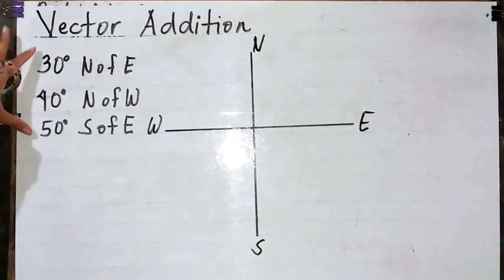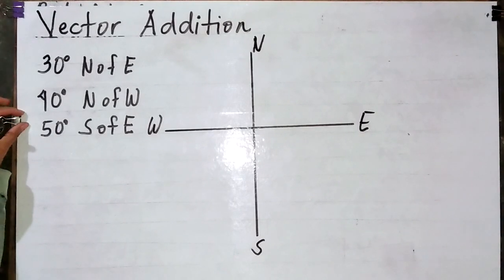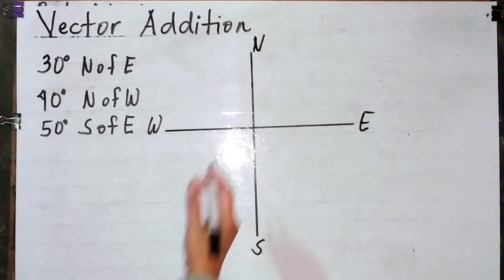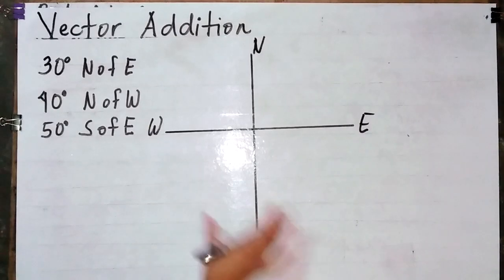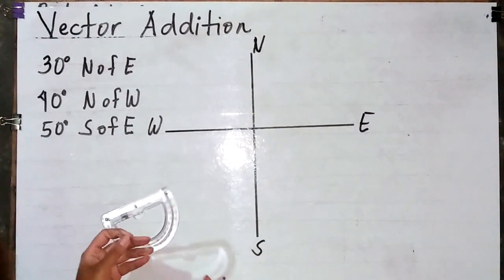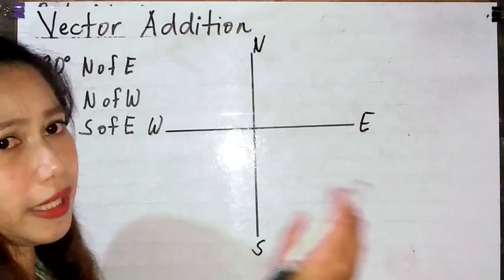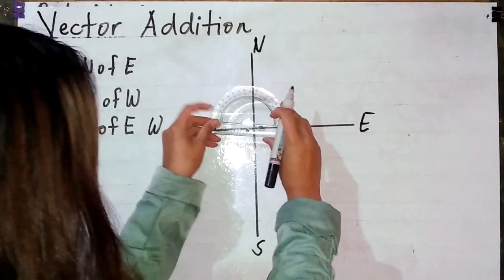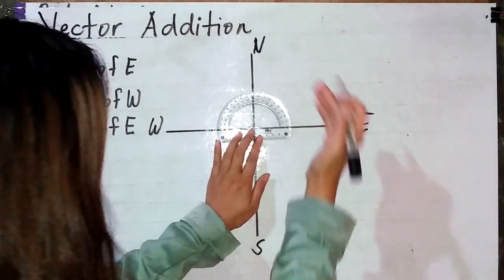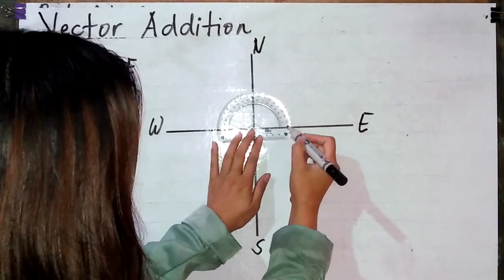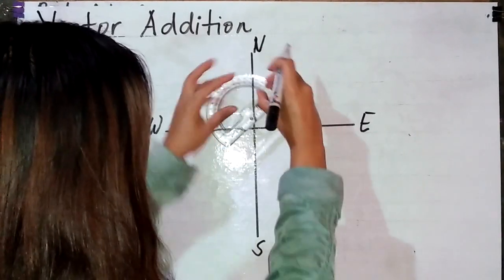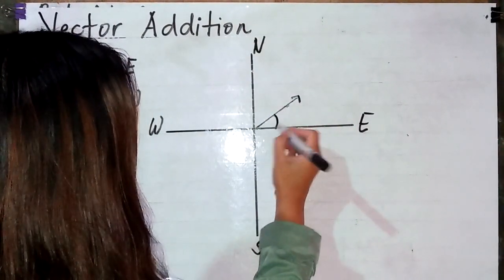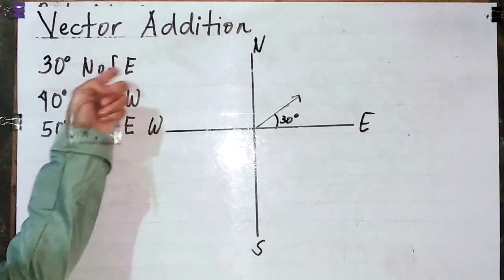Let's apply this using an example: 30 degrees north of east. How can we illustrate this on the Cartesian plane? Using our protractor, we can have 30 degrees north of east — ibig sabihin, east papuntang north. We align the protractor on the x-axis, and measure 30 degrees going upward. This is 30 degrees north of east.